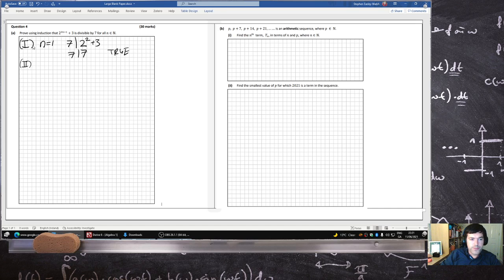Then 2, we assume 7 divides into 2 power 3k minus 1 plus 3. That's case k.